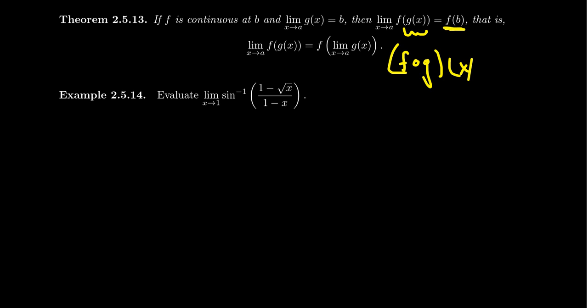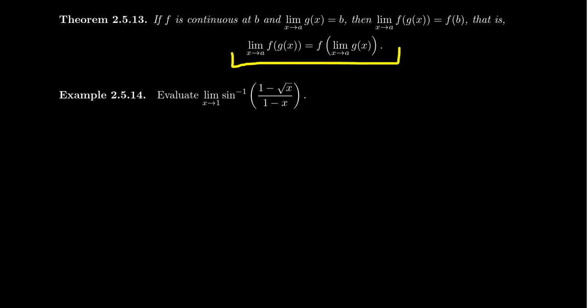I'm not assuming g is a continuous function. I'm just saying if the outer function in terms of function composition is continuous, then you basically can pull it out of the limit process. So the way one usually considers this property is: the limit as x approaches a of f of g of x equals f of the limit of g. You can factor a continuous function out of the limit process if it's the outer function.